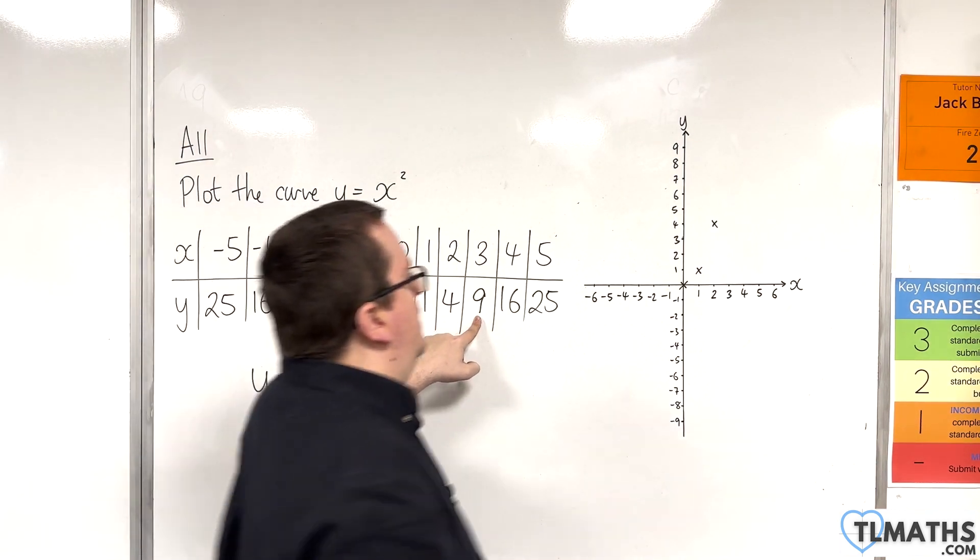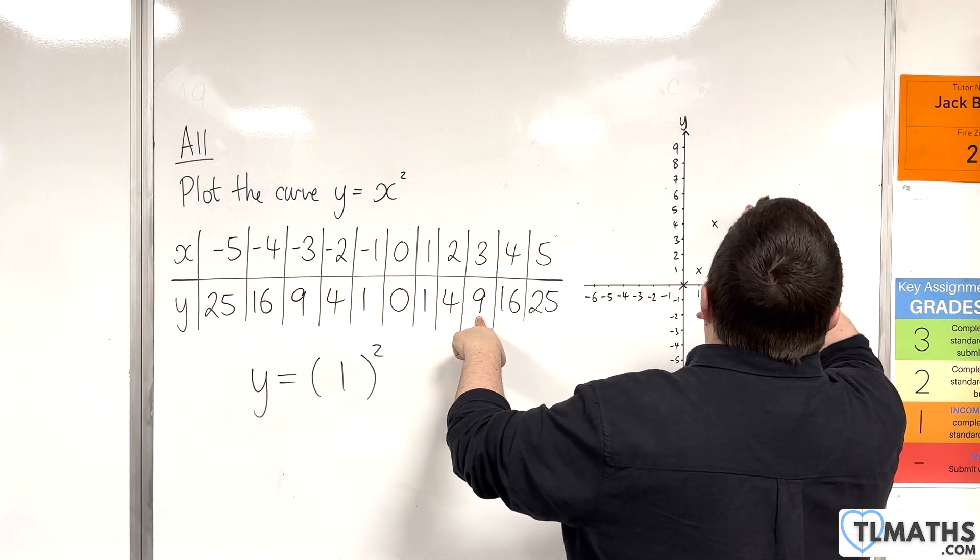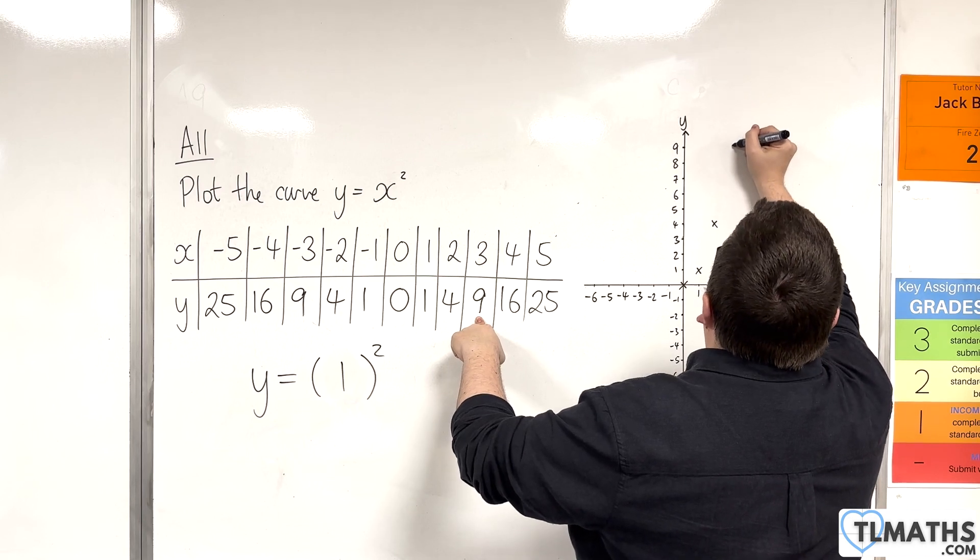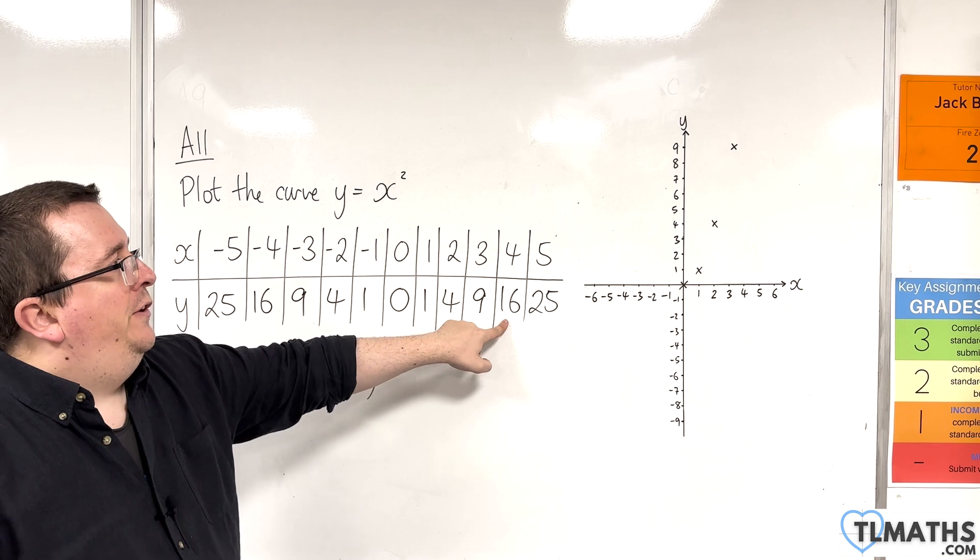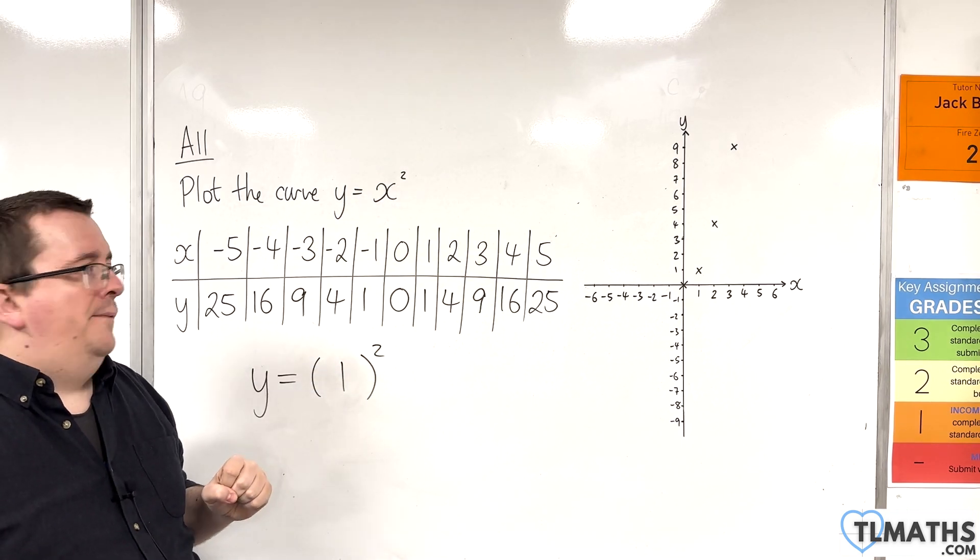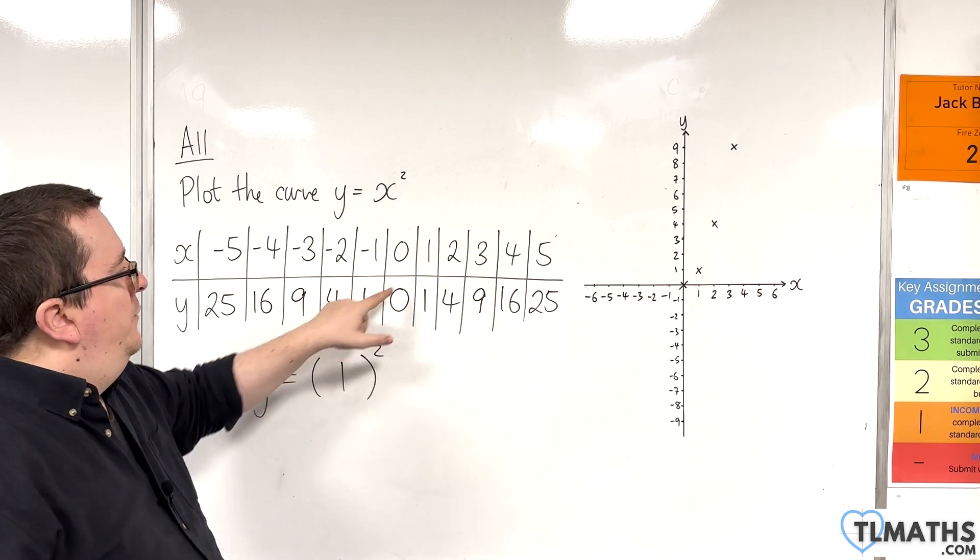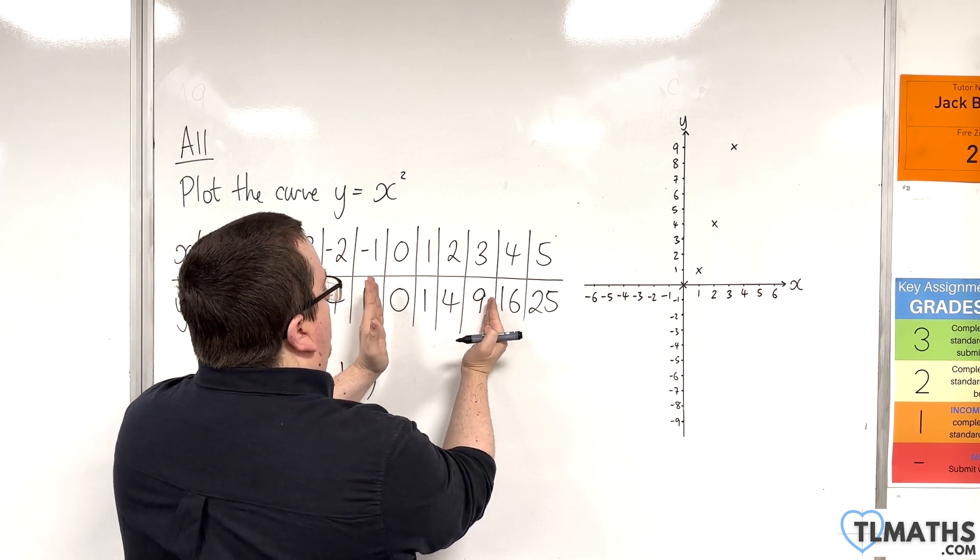Then, we have 3, 9. 3, 9 is about there. And then, 4, 16 is off the grid. Right. So, we've been able to plot those ones.